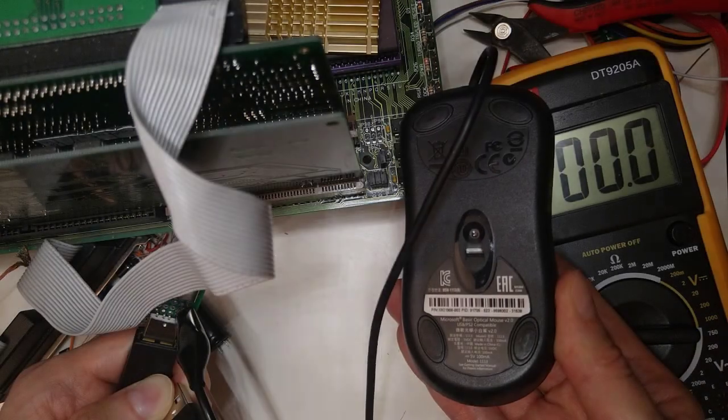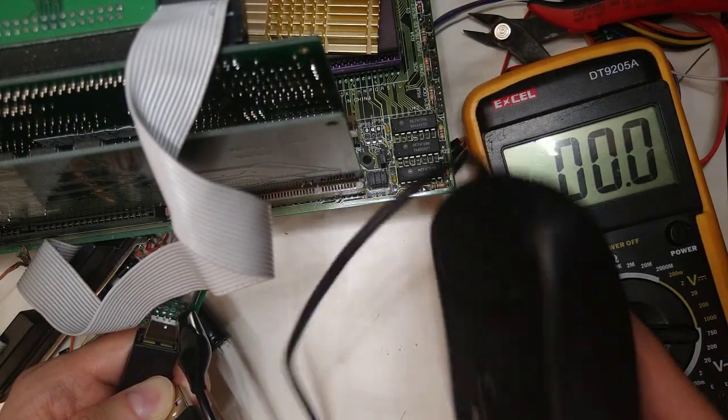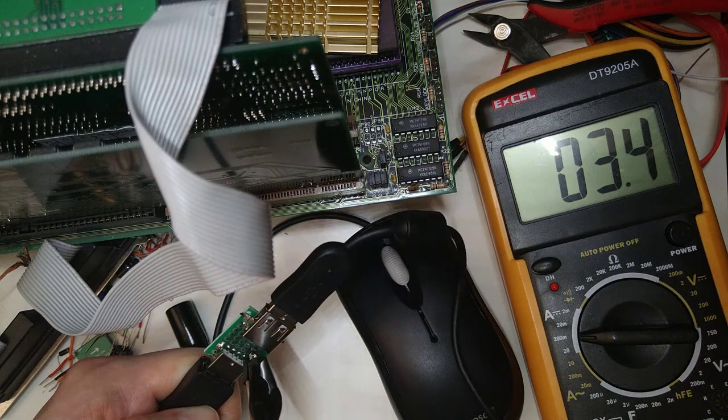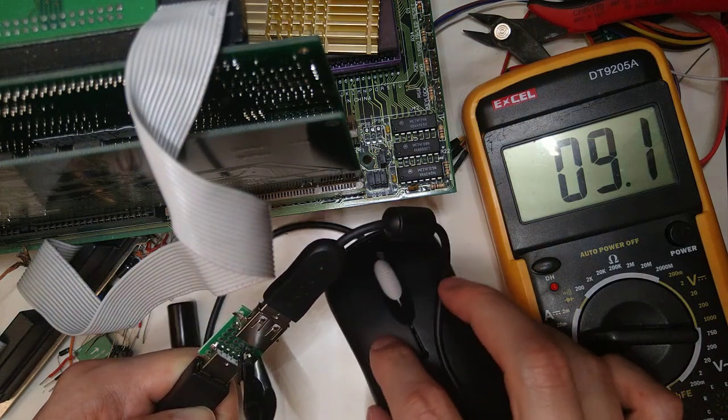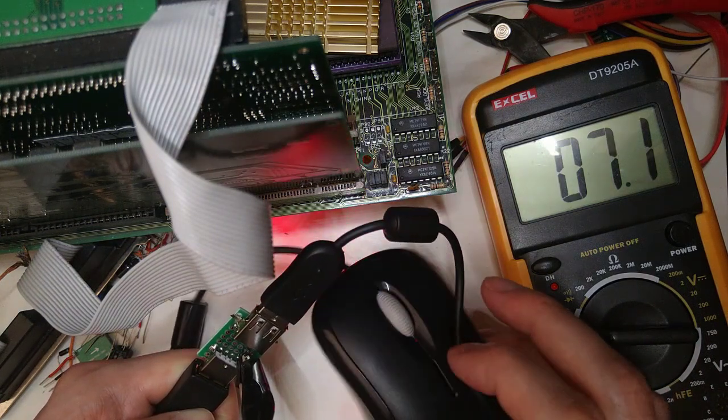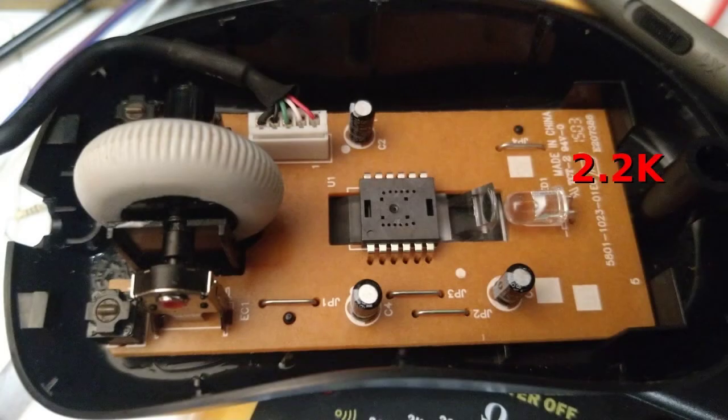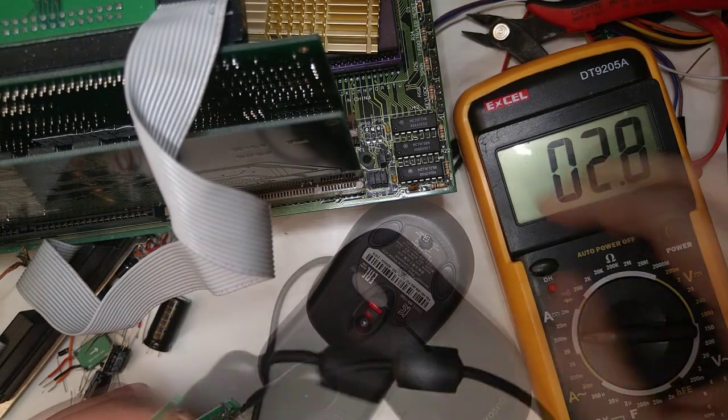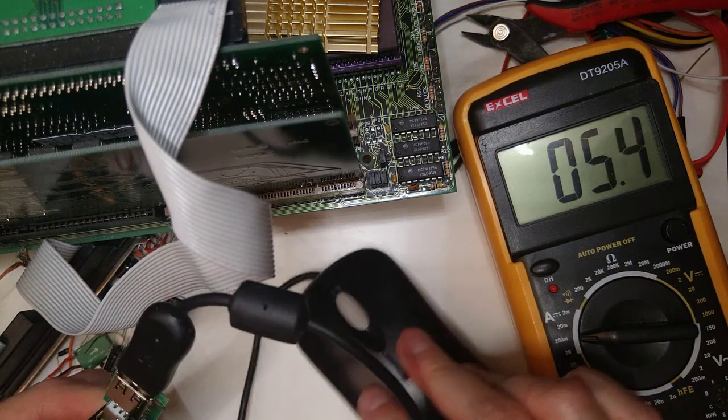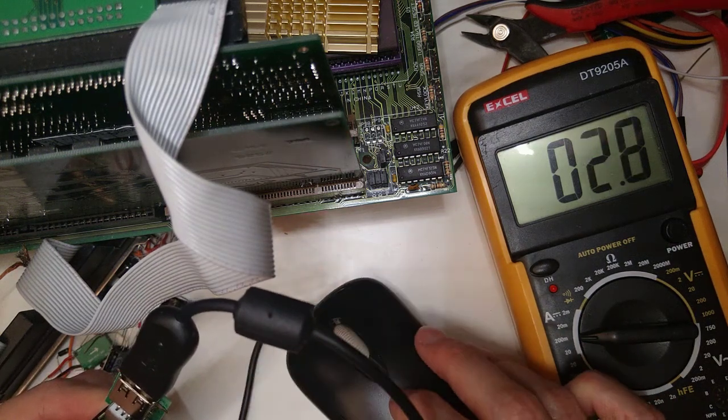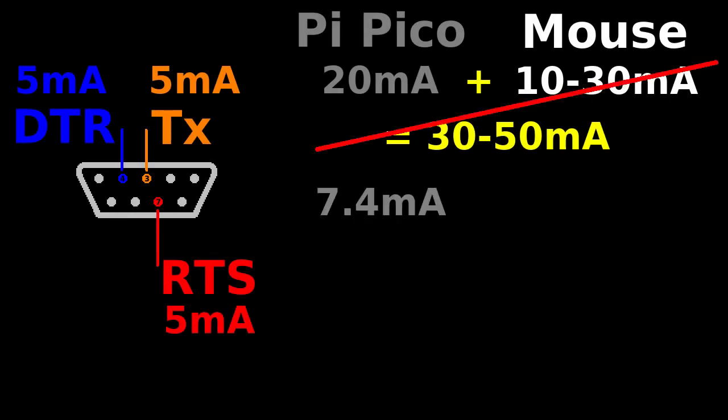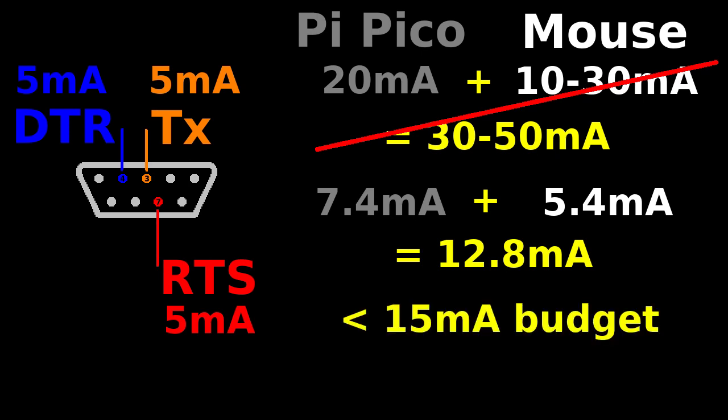Now it consumes 6.4 milliamps on idle and 8.3 milliamps when active, which is still too high. This older Microsoft basic mouse version 2.0 consumes 3.4 milliamps idle, 9.8 milliamps when active, and up to 15 milliamps when the LED is at maximum power, which looks more promising. This mouse works with a 2.2 kOhm resistor in series with the LED. And after the resistor mod, it consumes 2.7 milliamps on idle and 5.4 milliamps max. This is great as we're within our budget. 7.4 milliamps for the Pico plus 5.4 milliamps for the mouse is 12.8 milliamps, which is less than our 15 milliamp total budget.